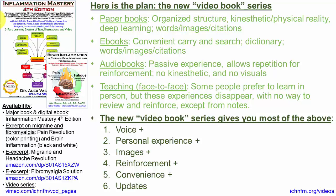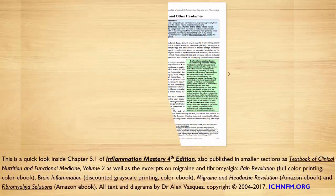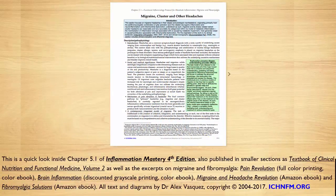In order to show you an example, we're going to look inside Inflammation Mastery at the section on migraine and fibromyalgia, which was also published as Pain Revolution in color and also Brain Inflammation in a discounted black and white grayscale printing. What we're able to do these days is actually look inside the book, and that gives me a chance to review some of the more complex disease models. Let's look here at chapter 5.1: migraine, cluster, and other headaches.